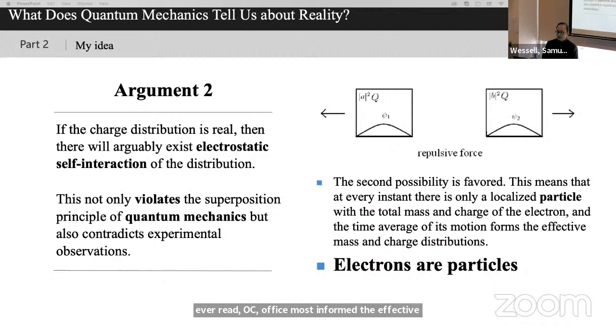So, it seems that the second possibility is favored. This means that at every instant there is only a localized particle with the total mass and charge of the electron, and the time average of its motion forms the effective mass and charge distribution. In other words, electrons are indeed particles.